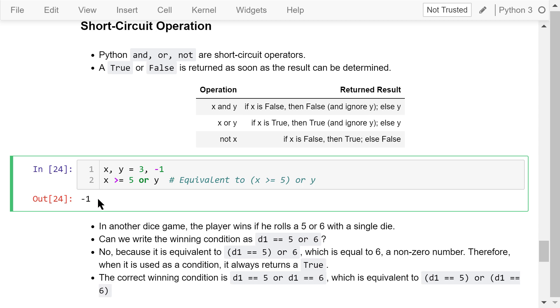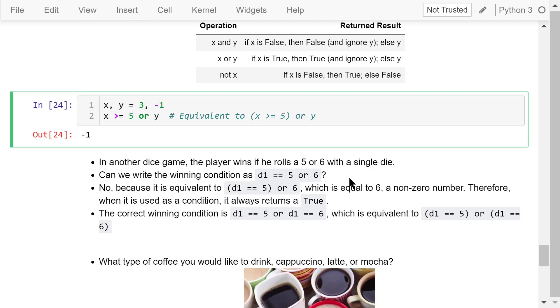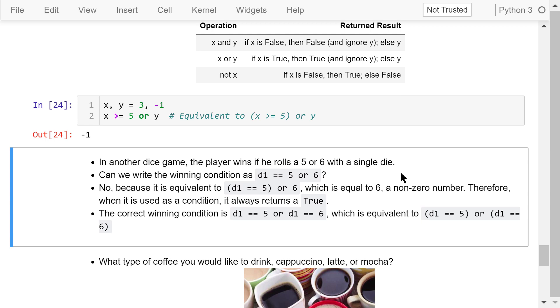The second example. Let's consider another dice game. A player wins if she rolls a 5 or 6 with a single die. Can we write the winning condition like this: d1 equals 5 or 6? The answer is no. This is because it's equivalent to d1 equals 5 or 6. 6 is a non-zero number. Therefore, the expression will always be true, no matter how many points are rolled. The correct winning condition is d1 equals 5 or d1 equals 6, which is equivalent to this version with parentheses.